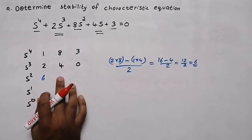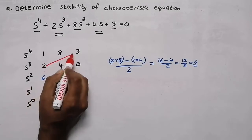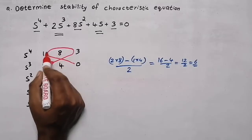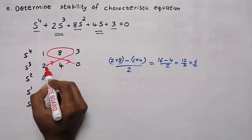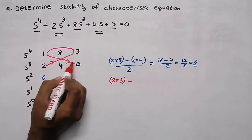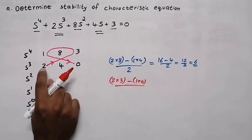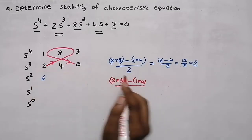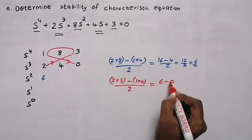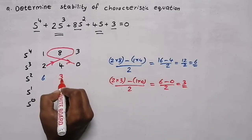Now we need to find the next element. Starting from 2, the direction goes like this: 2 into 3 minus 1 into 0, all divided by the starting element 2. That gives 6 minus 0 equals 6, divided by 2 — the answer is 3. So this element will be 3.